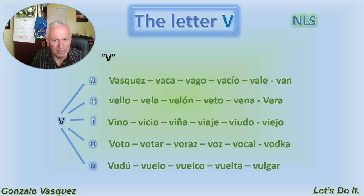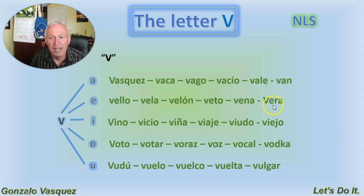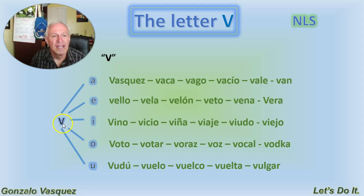Veto. Vena is a vein, where the blood runs. And Vera is a proper last name. Once again: vello, vela, velón, veto, vena, Vera.